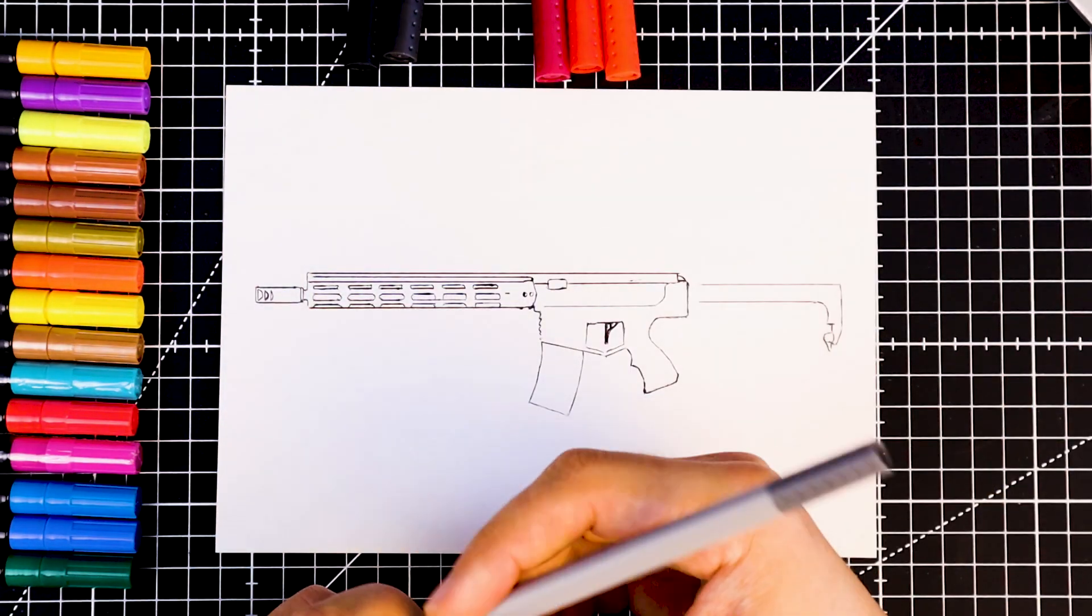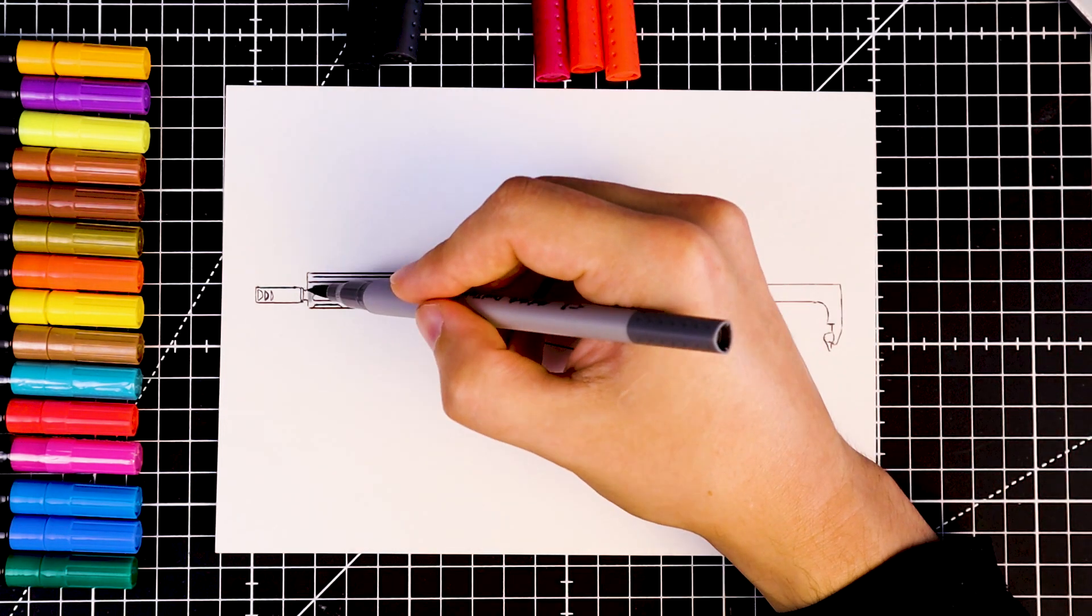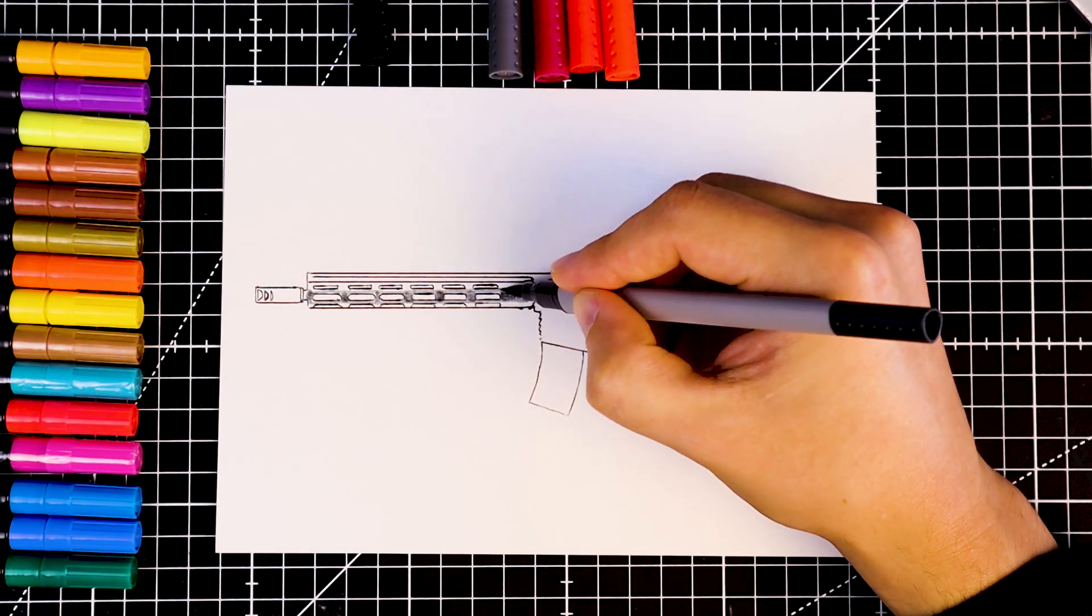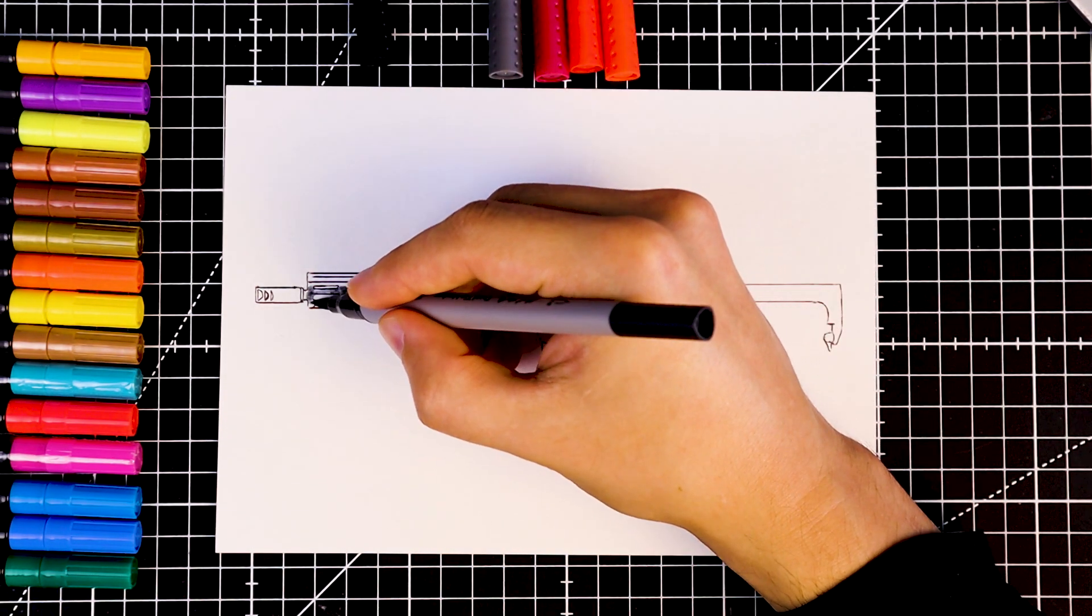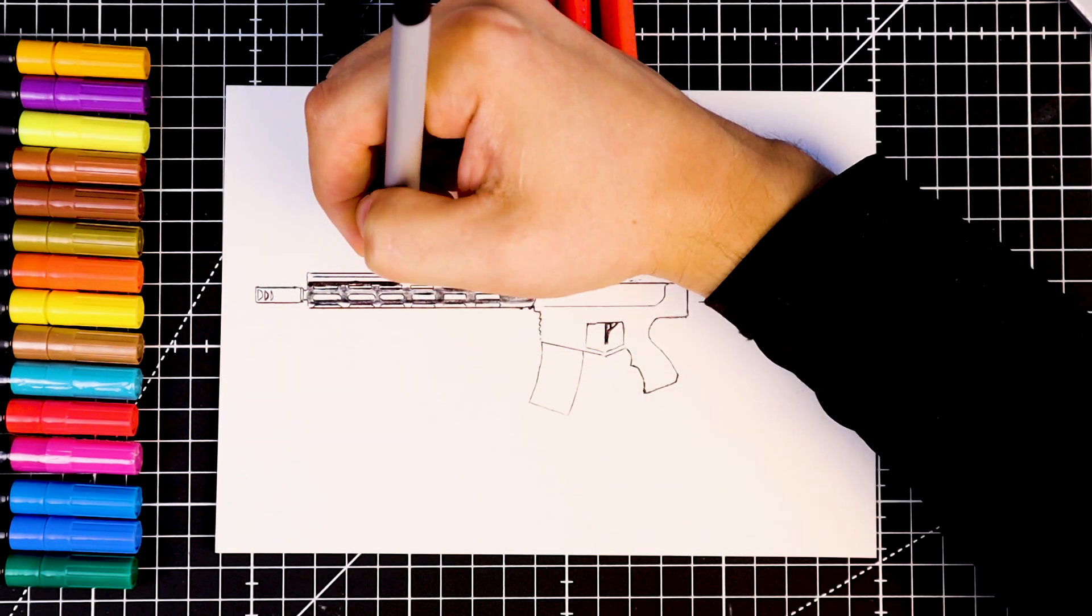Now it's time to colour our AR-15 rifle. For the middle section we'll use a grey marker. Then take a darker one. This way we get a smooth transition, a gradient and our drawing will look more realistic.